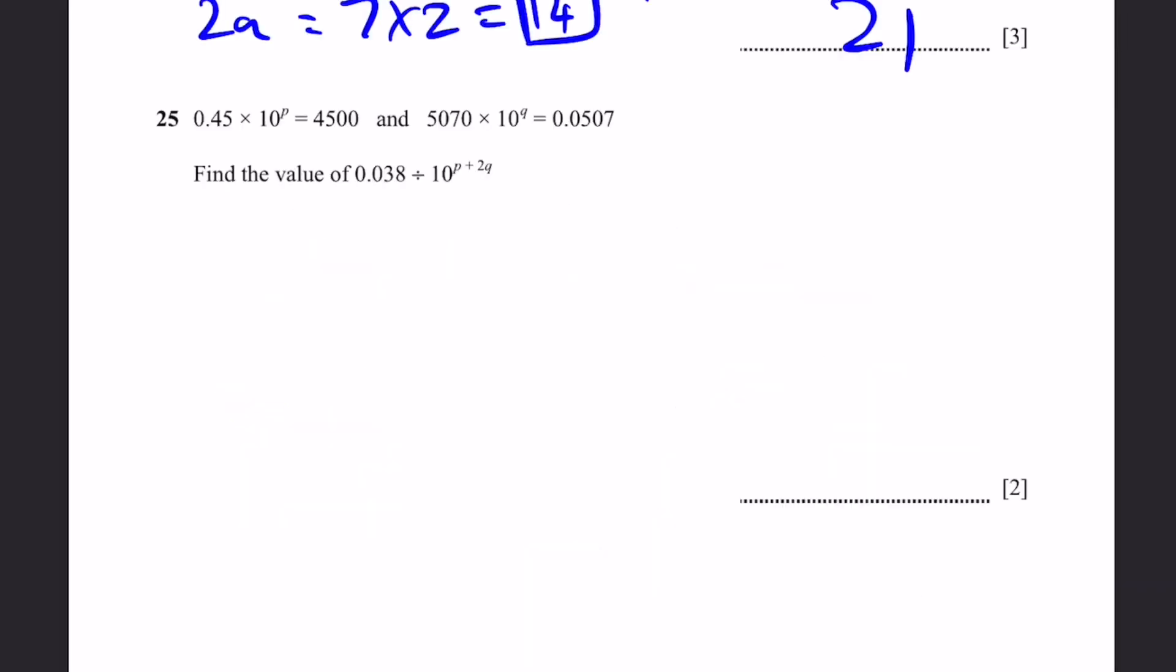Question 25. 0.45 times 10 to the power of p equals 4,500. And 5070 times 10 to the power of q equals 0.0507. Find the value of 0.038 divided by 10 to the power of p plus 2q. Well, 0.45 times 10 to the power of p equals 4,500. That means 10 to the power of p is equal to 4,500 by 0.45, which is equal to 10,000. And 10 to the power of 4 is 10,000. So that means p equals 4. But in other words, you can write this as 10 to the power of 4. So p equals 4.